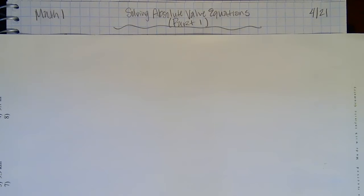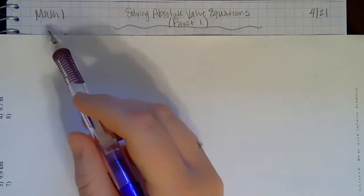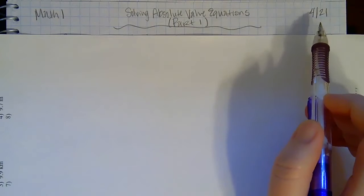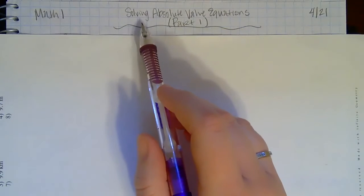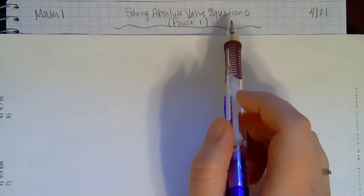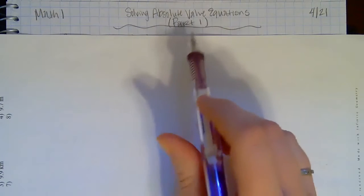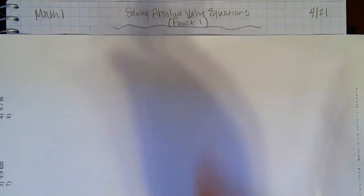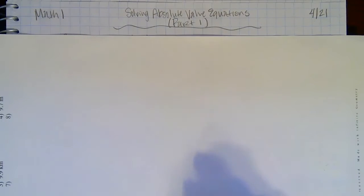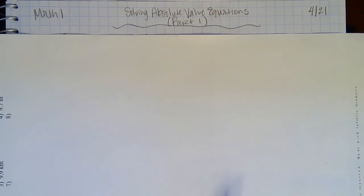Hey everybody and happy Tuesday. This is for Math 1 for April 21st, and today we're going to look some more at solving absolute value equations. This is part one of what we're going to be doing with this. It's built off what we did yesterday, so I want to quickly go over what we learned yesterday just to make sure we're ready to go.